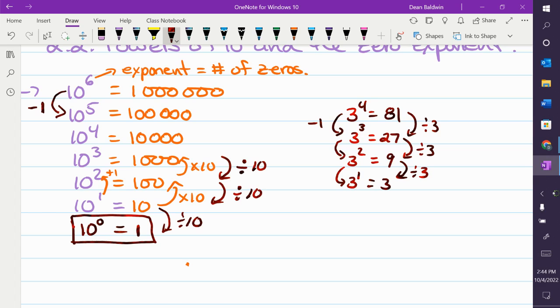Go one more step. What's 3 divided by 3? Take 1 away from the exponent. What am I left with? So I get 3 to the 0 is equal to 1.